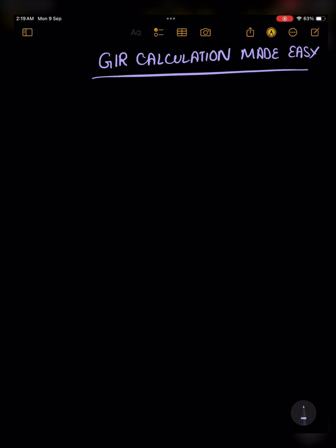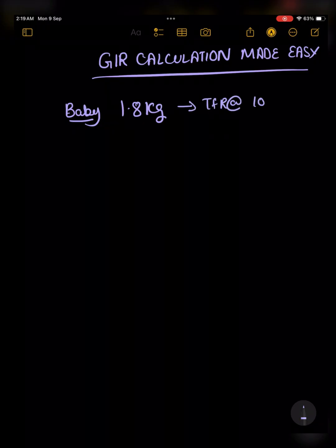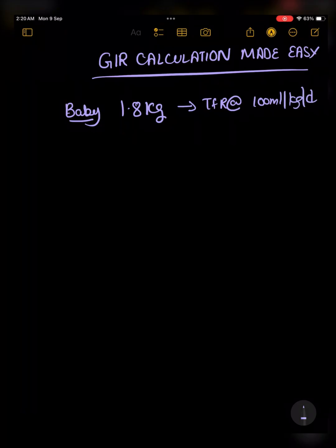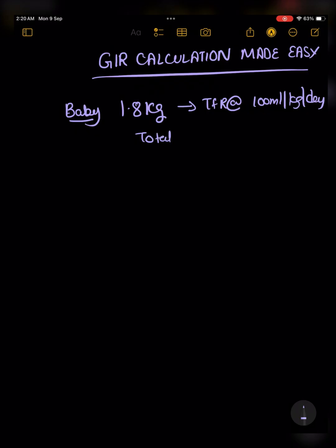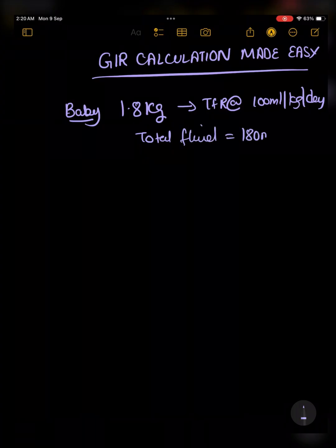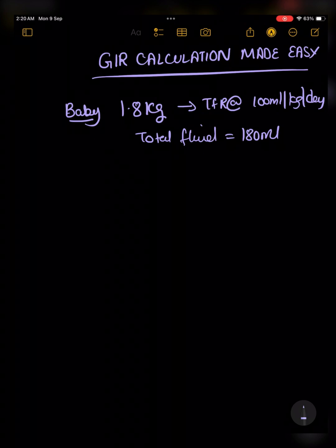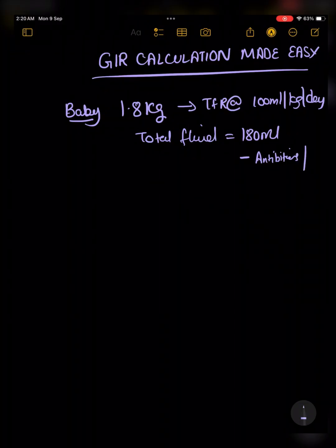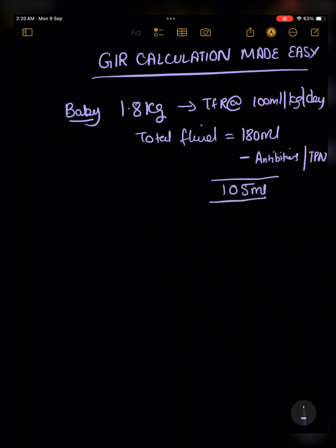Let's learn the easiest way to calculate the GIR. If you understand the concept, you will not have to learn any formula. Suppose you're given a baby whose birth weight is 1.8 kg and you are told to give a TFR at 100 ml per kg per day. The total fluid comes to 180 ml per day. After calculating the antibiotics and TPN, the fluid you are left with is only 105 ml.